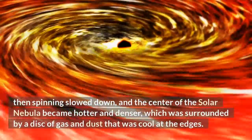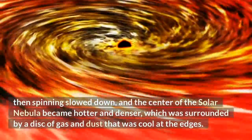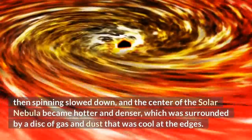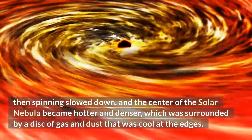Then spinning slowed down, and the center of the solar nebula became hotter and denser, which was surrounded by a disk of gas and dust that was cool at the edges.